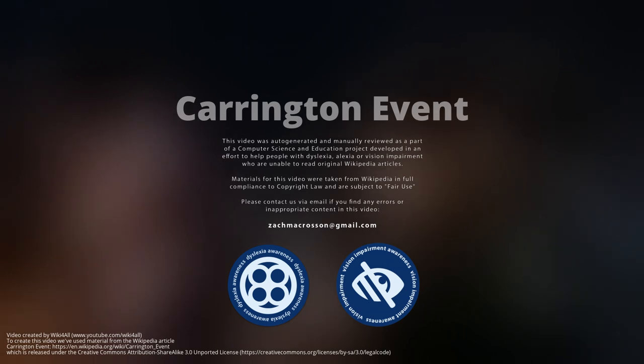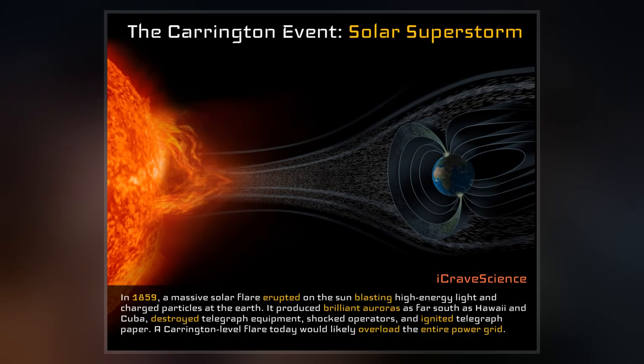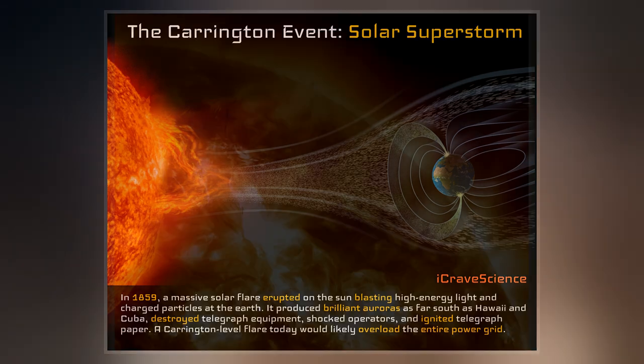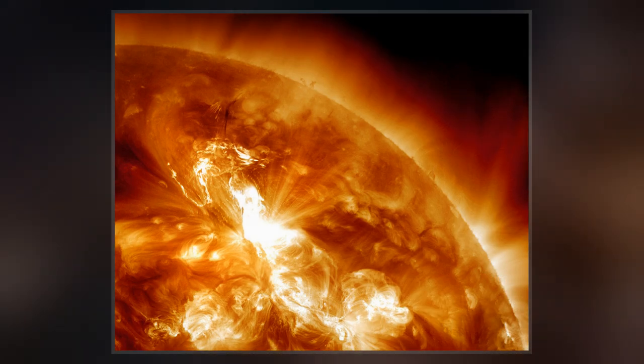The Carrington event was a powerful geomagnetic storm on September 1, 1859, during solar cycle 10. A solar coronal mass ejection hit Earth's magnetosphere and induced the largest geomagnetic storm on record.